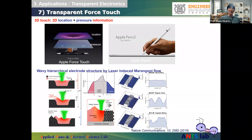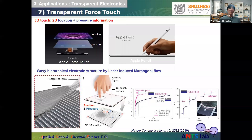Using selective laser-induced Marangoni flow of metal nanoparticles, a 3D touch was demonstrated. Conventional 3D touch such as force touch in iPhone uses two separate layers — a 2D location touch sensor and a press sensor — attached back to back, or requires a special stylus like the Apple Pencil. With fine tuning of laser parameters, a unique wavy pattern was created. The developed transparent force touch can detect touch location and touch pressure simultaneously with just a single layer, with a broad and sensitive sensing range.